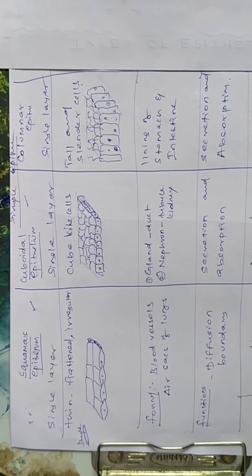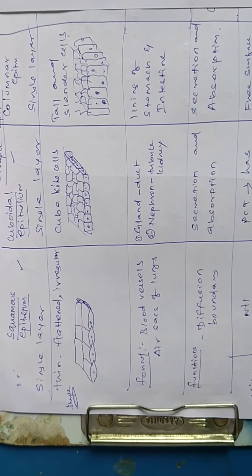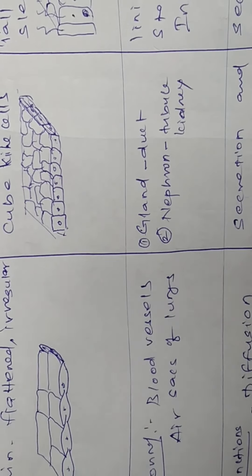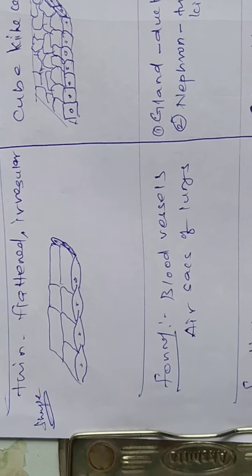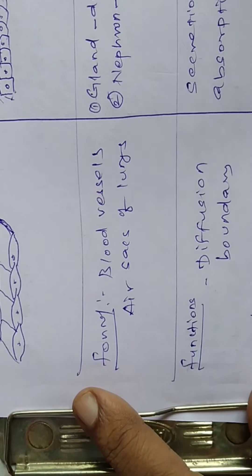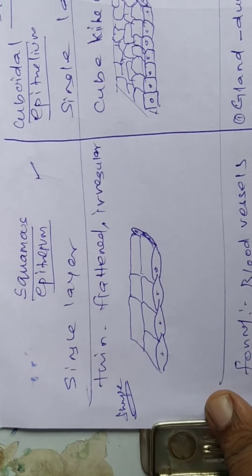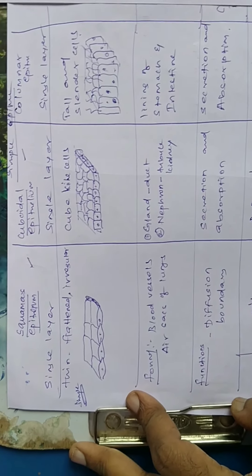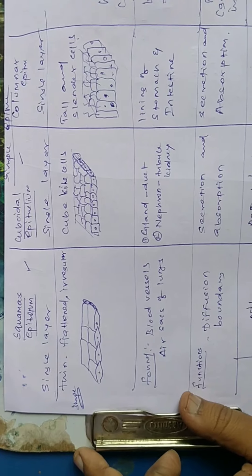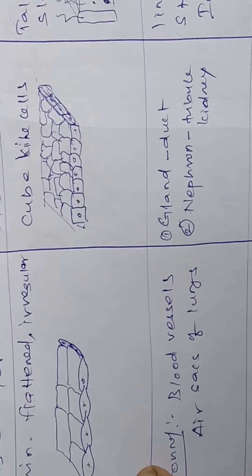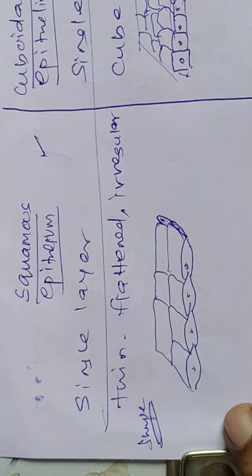In the case of simple epithelium, we will discuss squamous epithelium clearly. For each epithelium, only six points we are going to discuss. The first two points are common to all three types. If you read in a table manner — by comparative manner — you can understand easily. This is the easy way to understand the concept. Let us start with squamous epithelial tissue: it is a single layer.